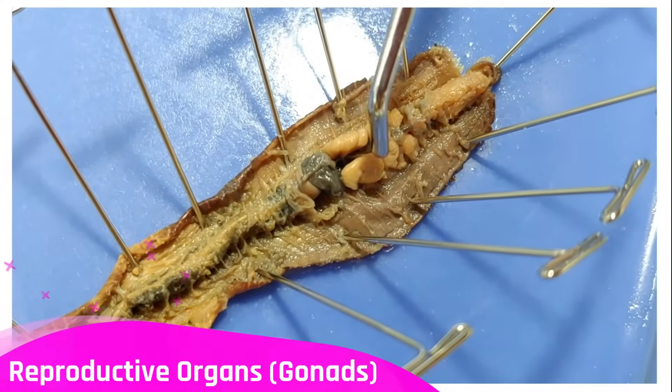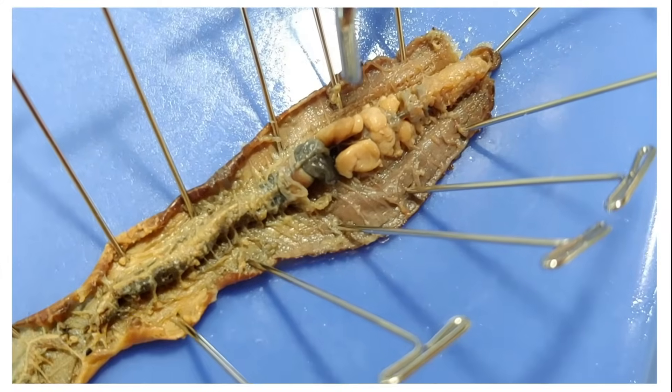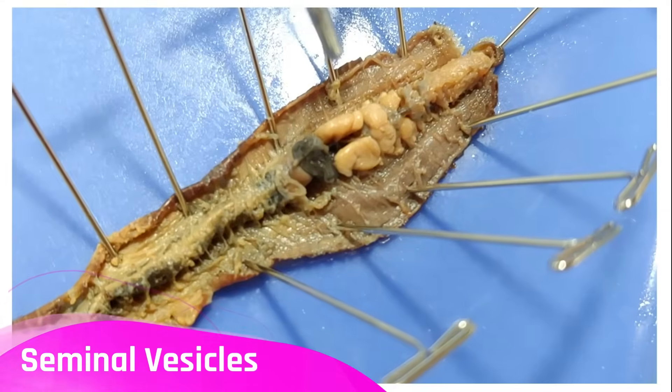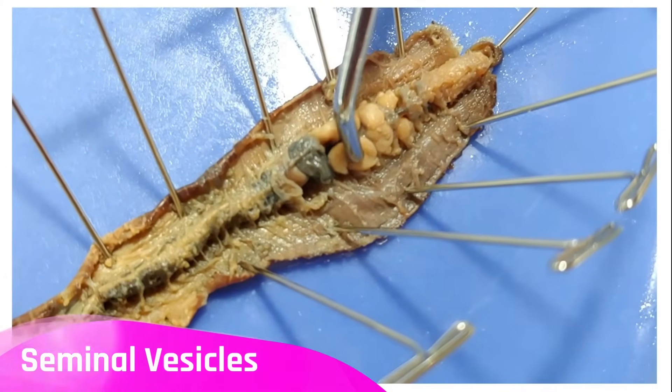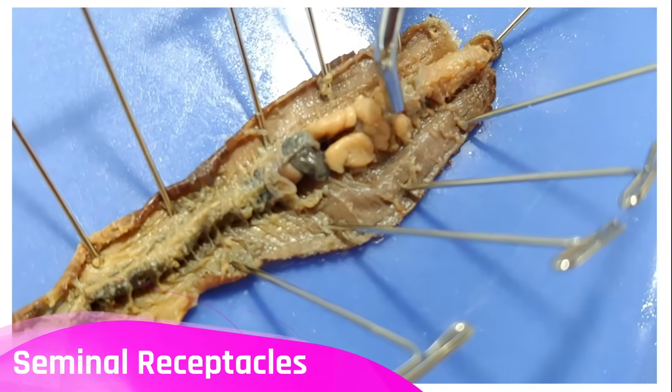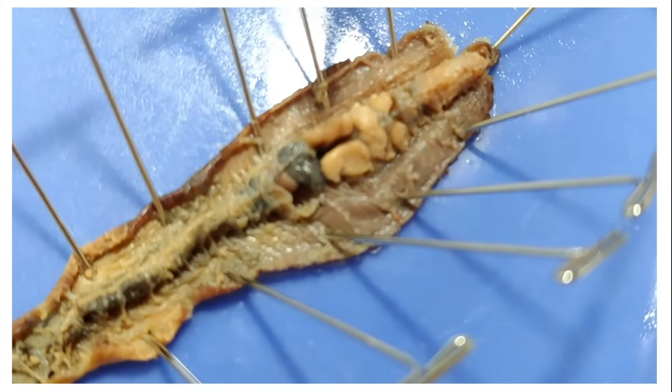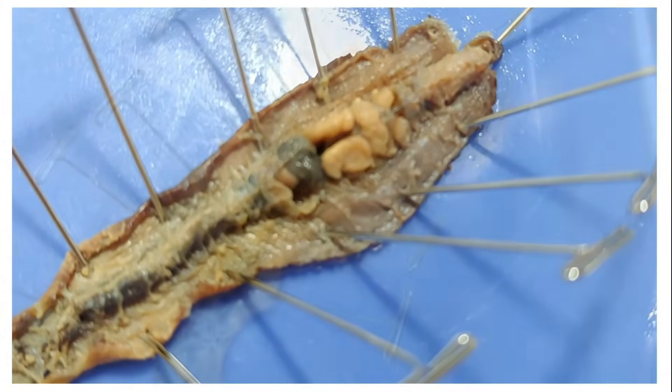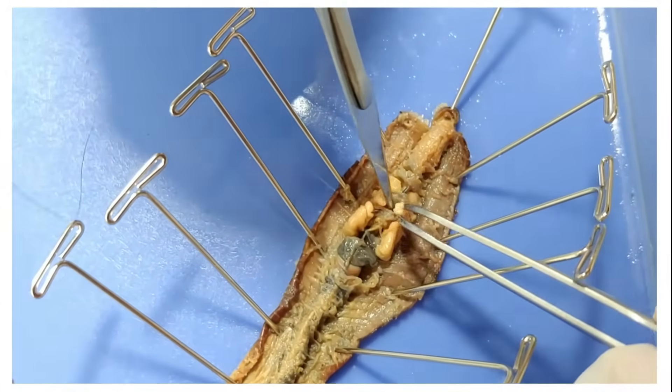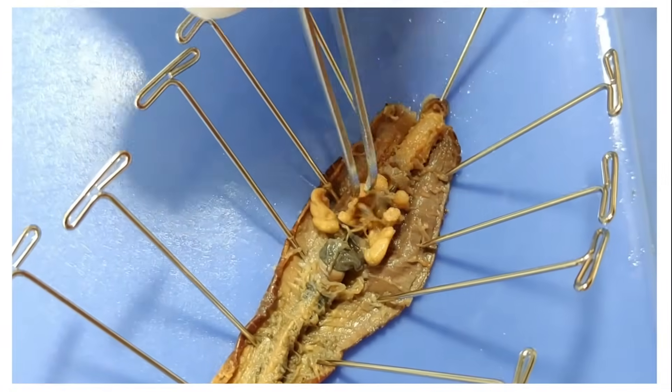Down here are the reproductive organs. Worms are hermaphrodites which means they have both male and female reproductive organs. The male organs are the seminal vesicles which produce sperm and are right here. Now what's really interesting is what their eggs look like. So look it up for yourself. If you need extra incentive, I'll tell you worm eggs look like tiny lemons. Right now I'm moving these reproductive organs aside.